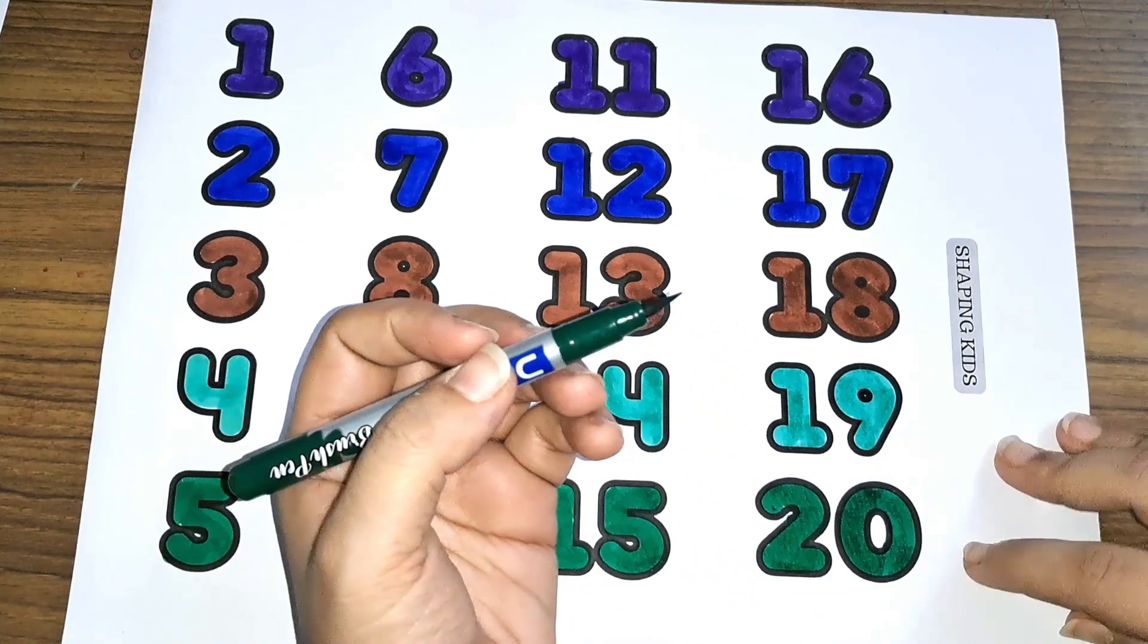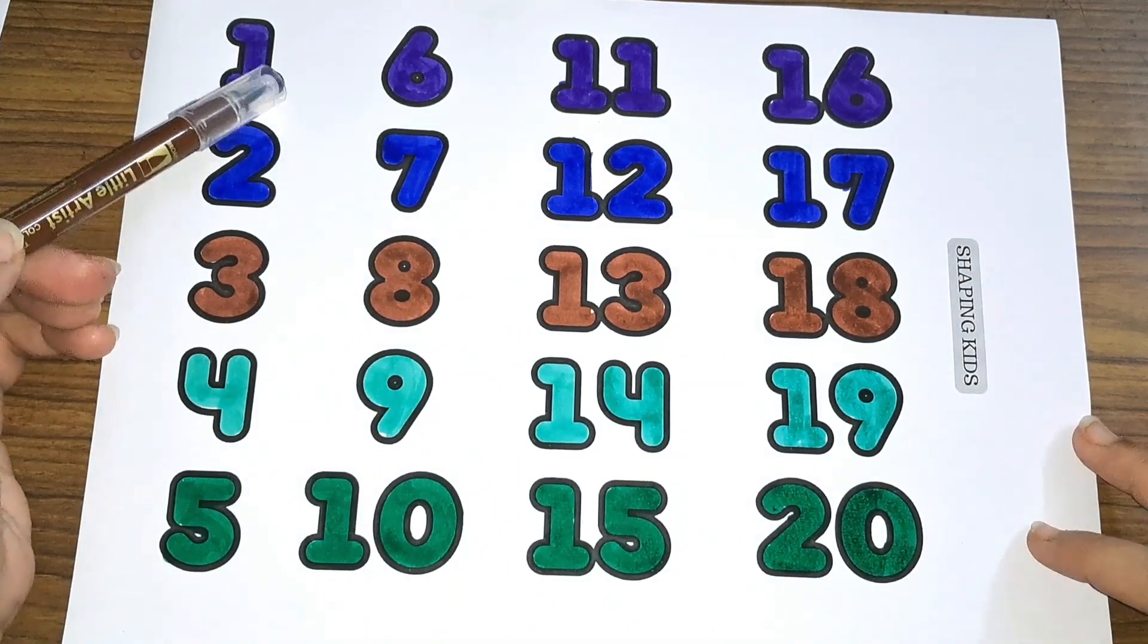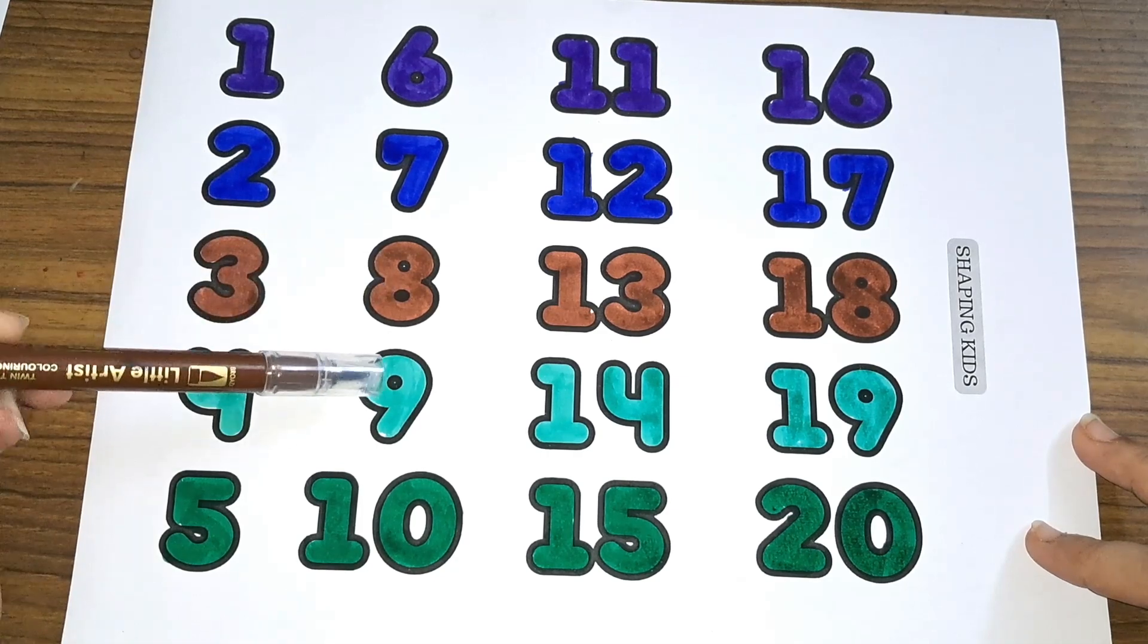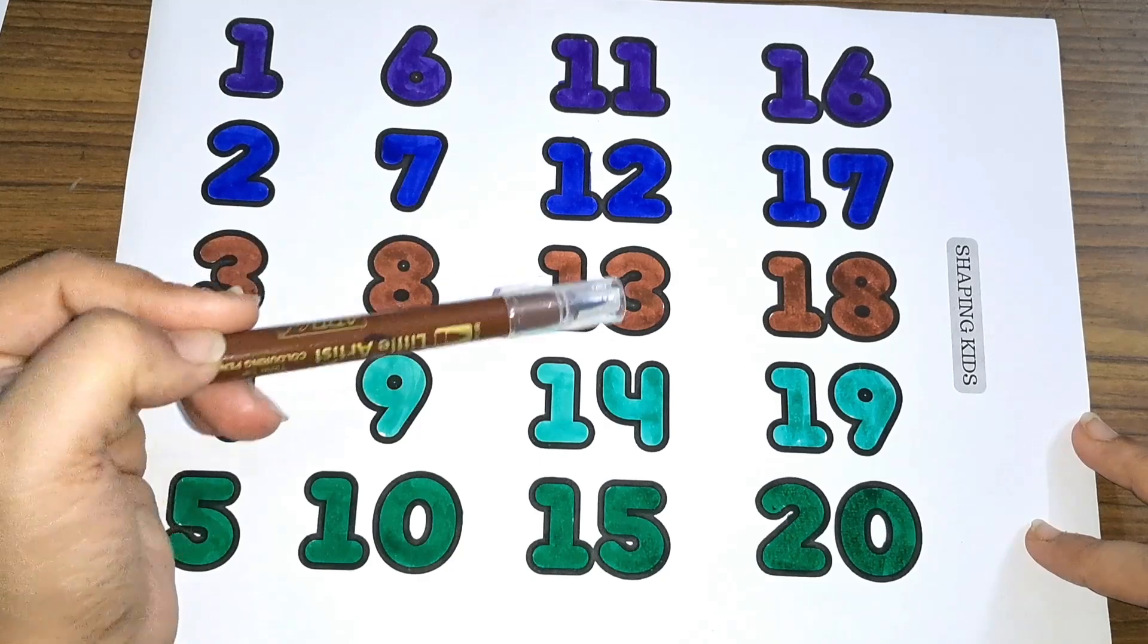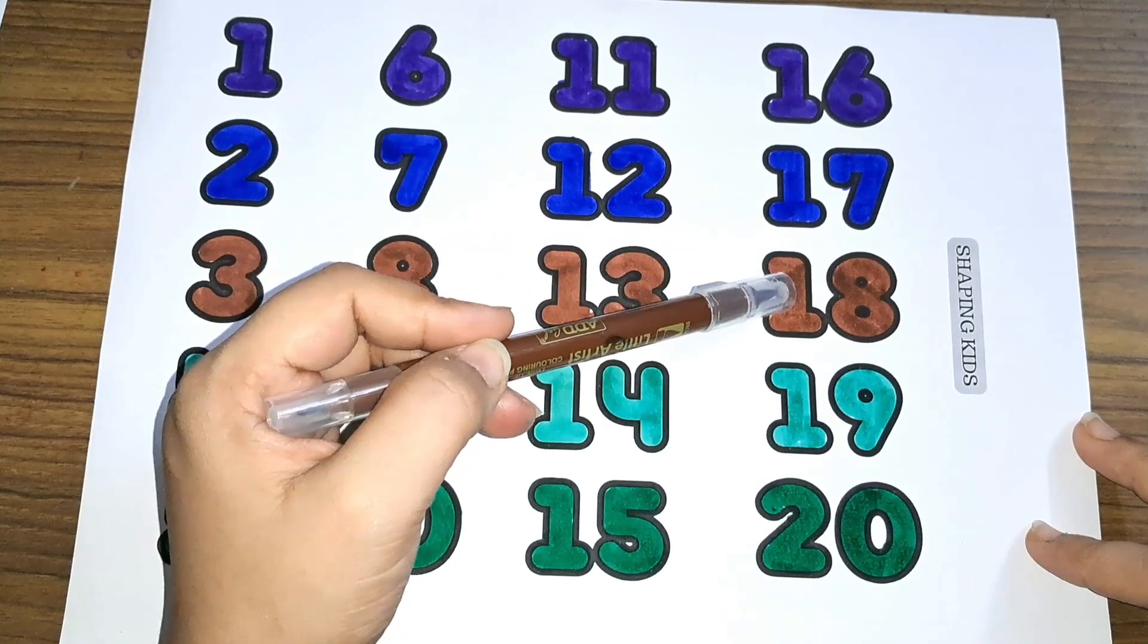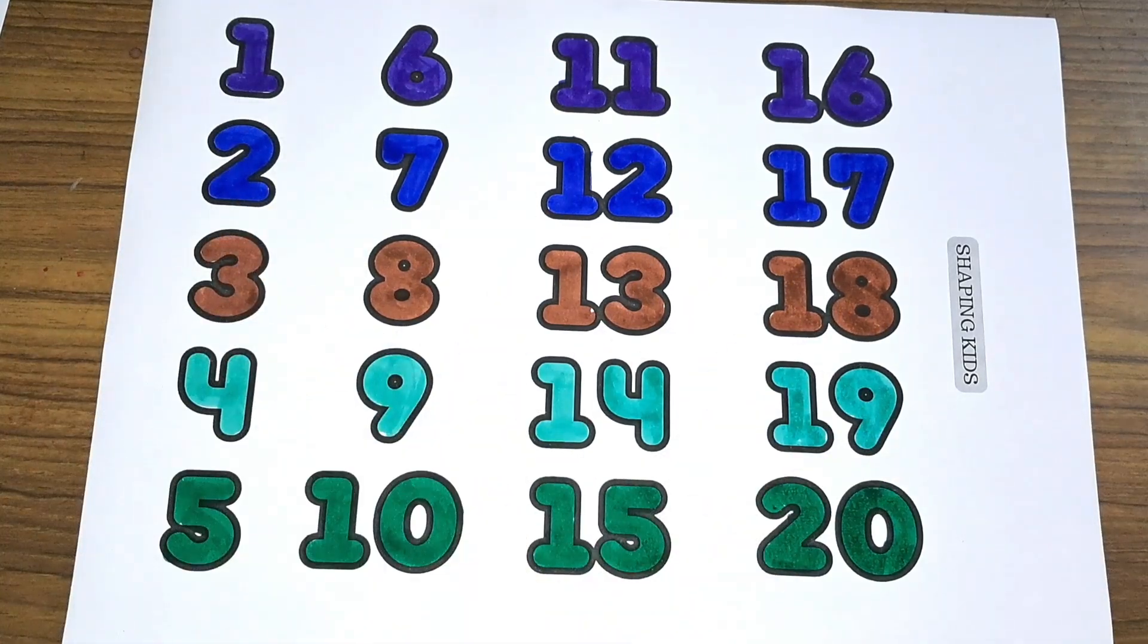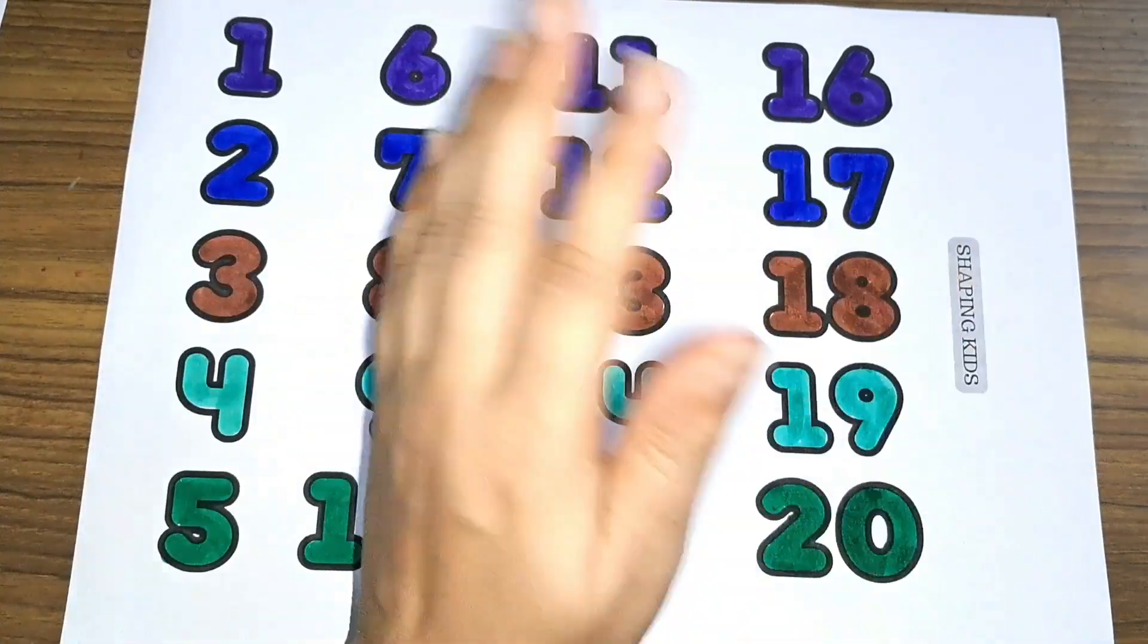One, two, three, four, five, six, seven, eight, nine, ten, eleven, twelve, thirteen, fourteen, fifteen, sixteen, seventeen, eighteen, nineteen, twenty. Numbers one to twenty. Don't forget to like and subscribe. Bye, see you later.